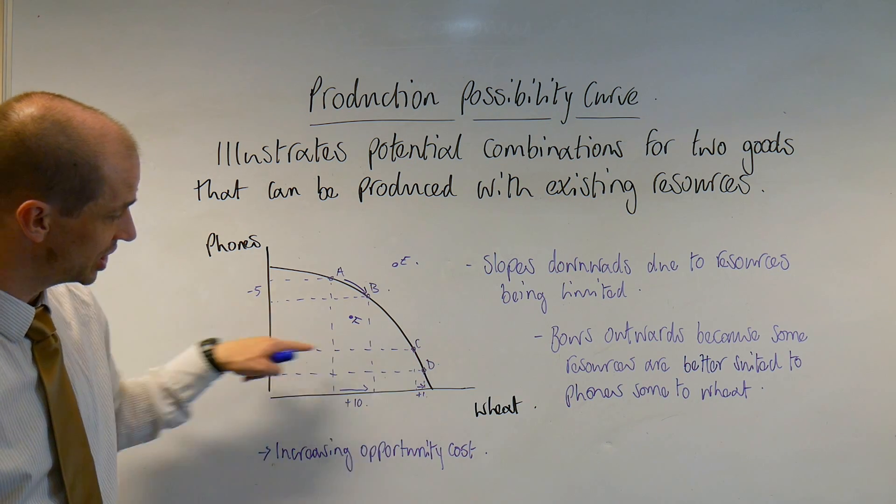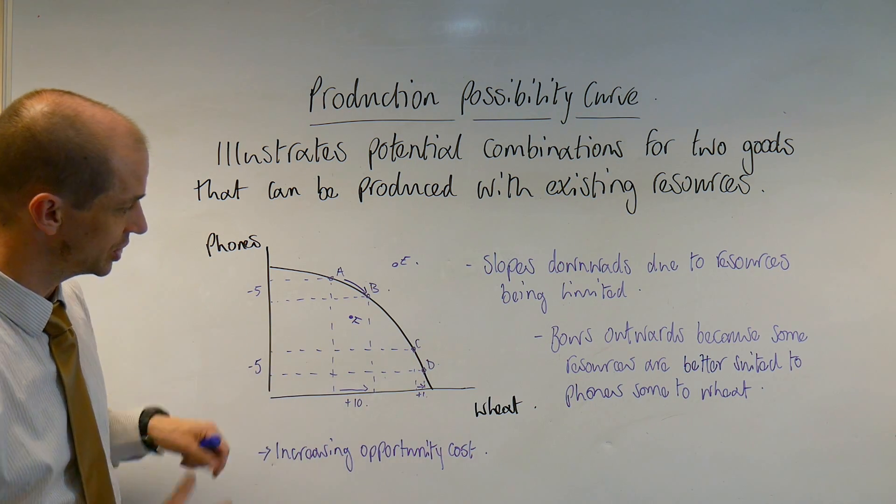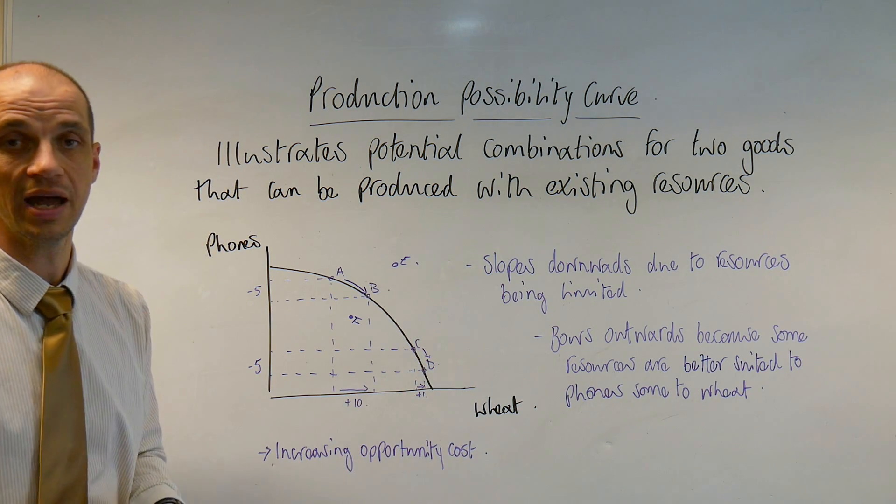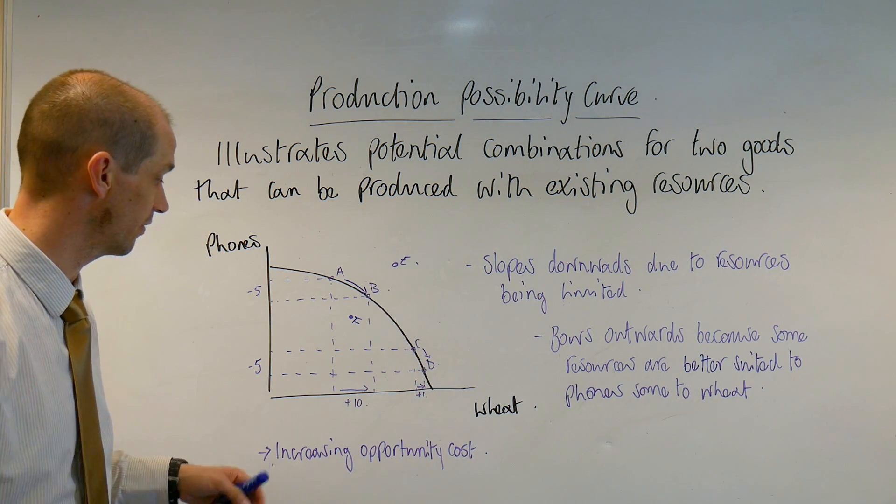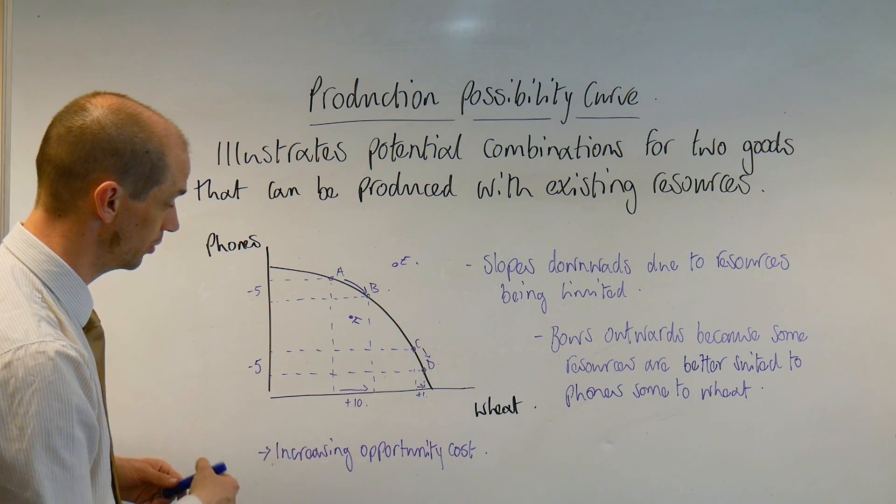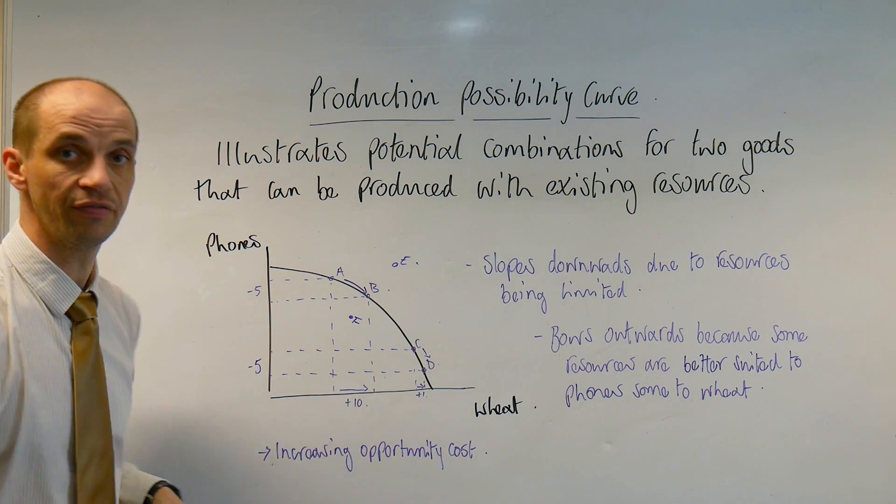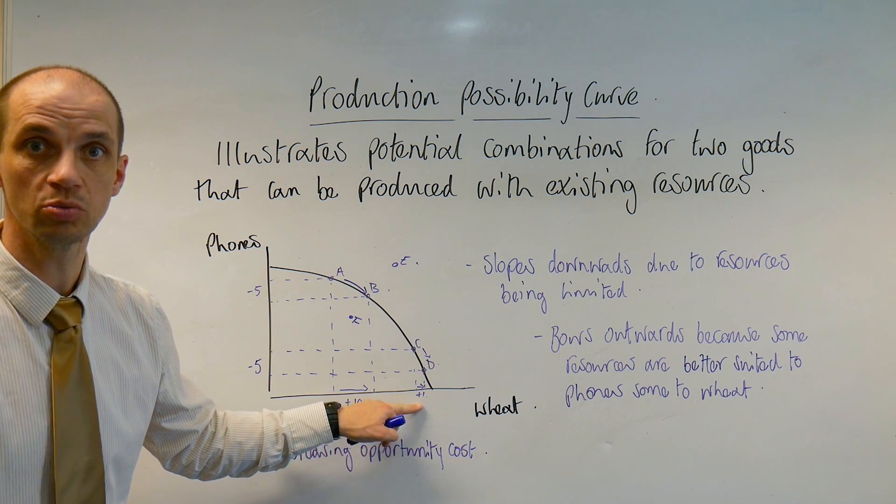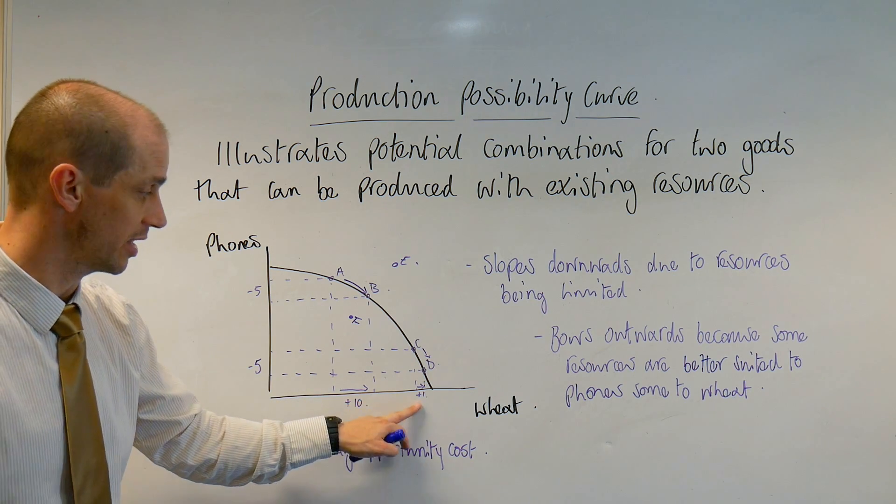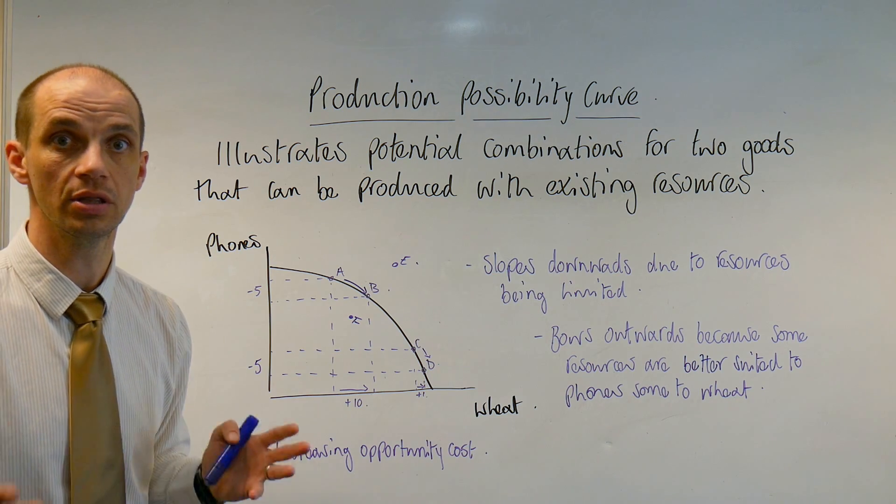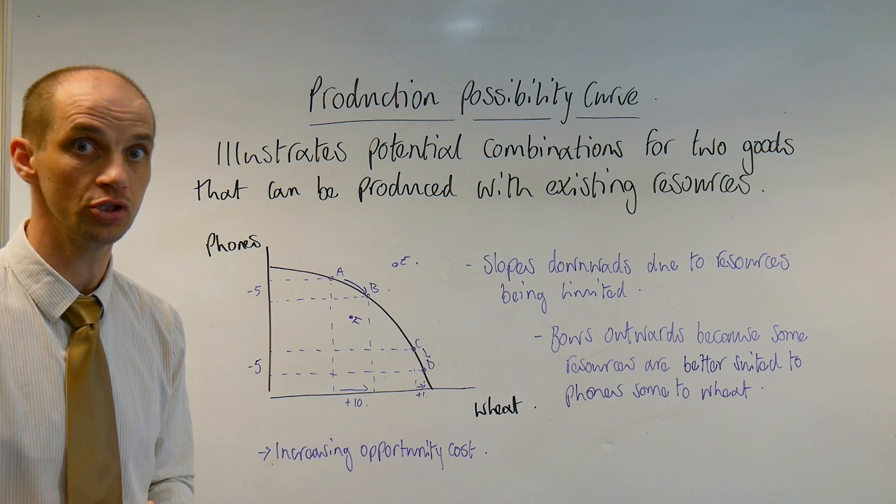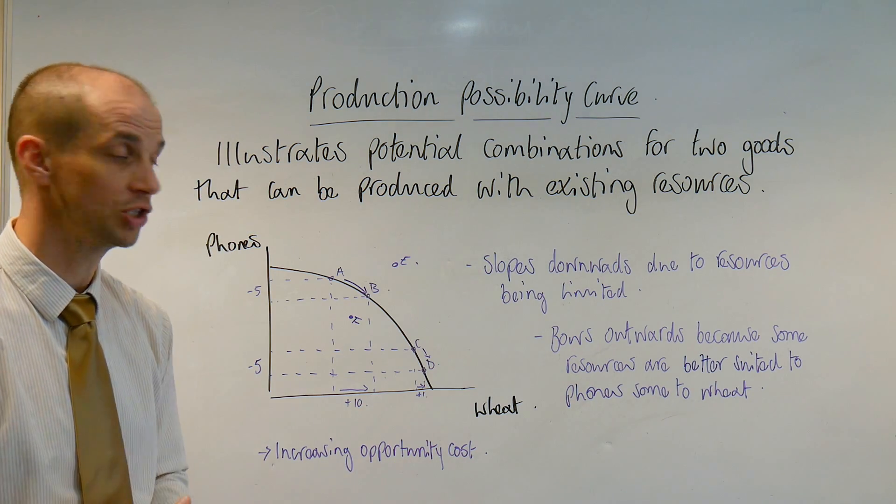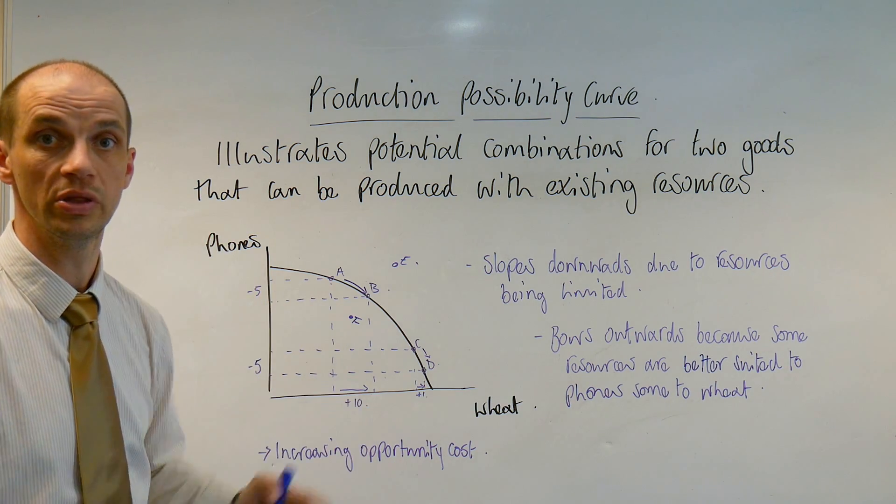Now just coming down to point C, if we move down to point C and then transition to point D, well we can still see that that is a productively efficient level of output, where we have minus 5 phones being given up but we have plus 1, just plus 1 now in terms of the actual increase in the quantity of wheat that is now produced. So there is an increasing opportunity cost reflected within this diagram.